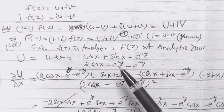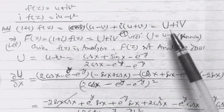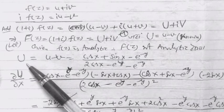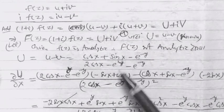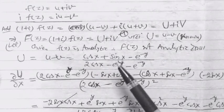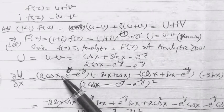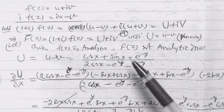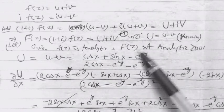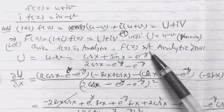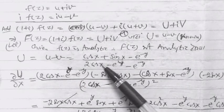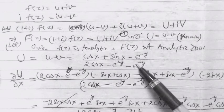Milne's method के लिए सबसे पहले differentiate partially with respect to x करते हैं। δU/δx निकालेंगे quotient rule से — नीचे वाले का square आएगा, नीचे वाली term as it is, और ऊपर वाली का differentiation: -sin x + cos x, और e^y का partial x के साथ 0 हो जाएगा। Minus ऊपर वाली term as it is और नीचे वाली का partial differentiation x के साथ: -2sin x, बाकी terms का 0।